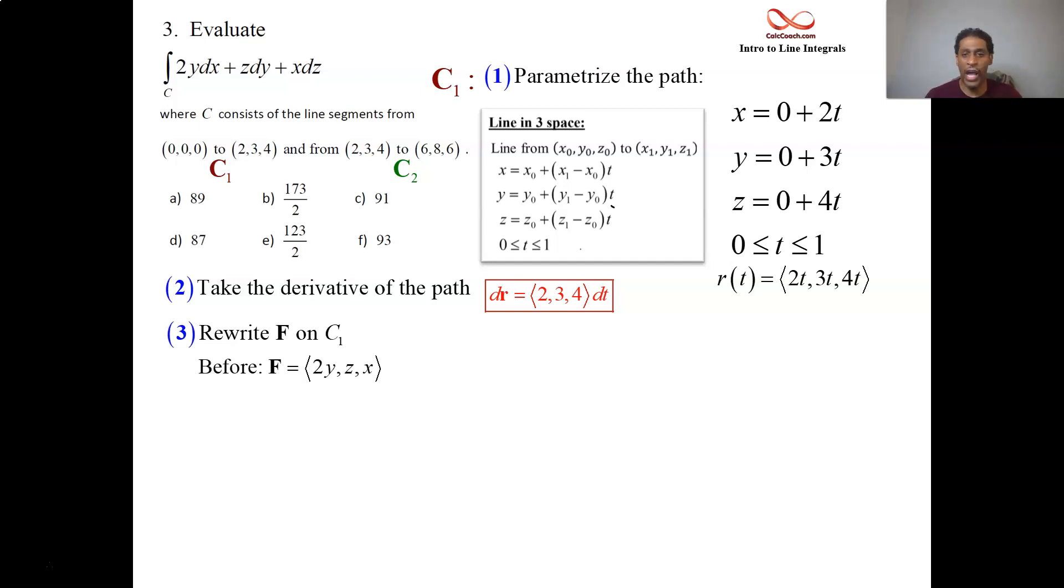But y is 3t, z is 4t, and x is 2t. So you rip those out, put those in, and you'll have F restricted to C1. You don't care about the parts of F that aren't above C1.